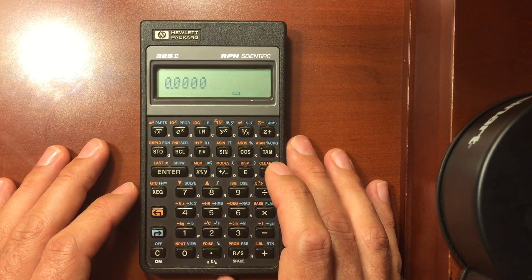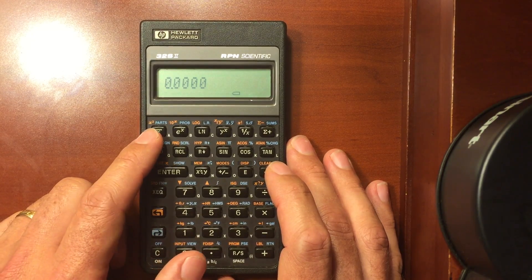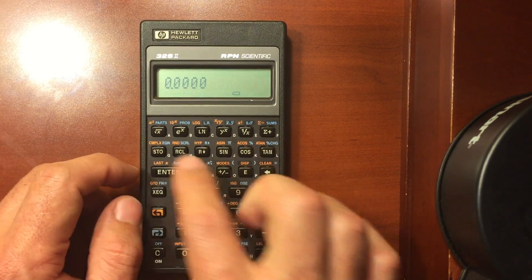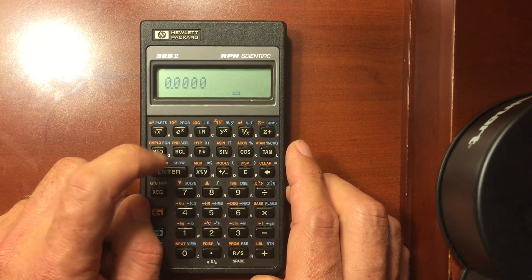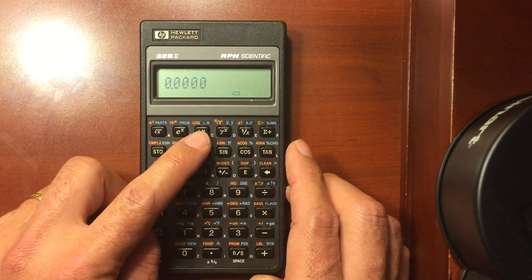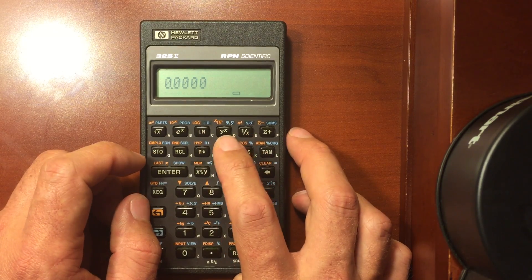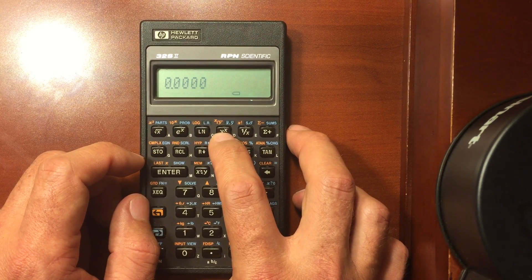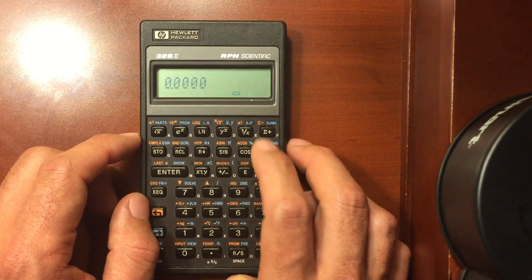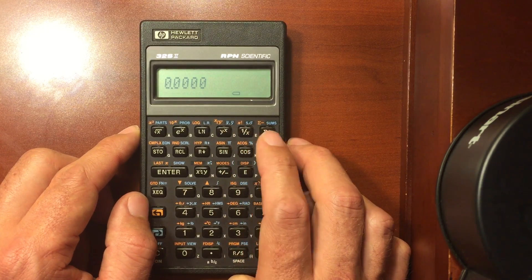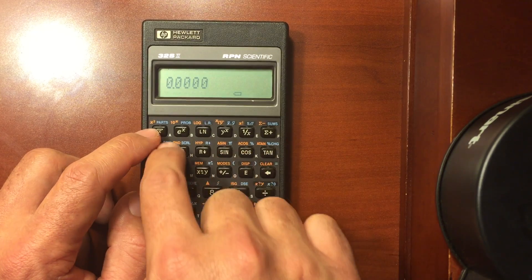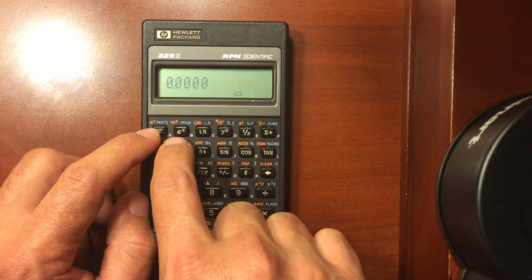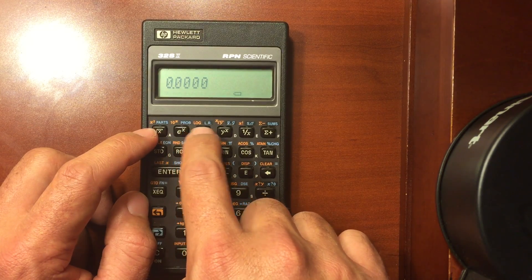We have just basic functionality here across your top row: your square roots, your natural number to an exponent, your natural log, a number to an exponent, reciprocal of a number. Those are all pretty standard. And again you have on the tops, you know, ten to the x, your x squared, your regular log, your x to the root of a number.